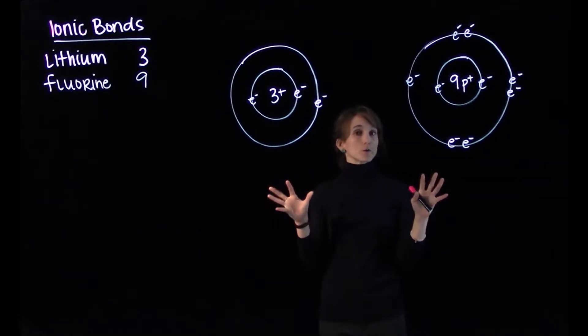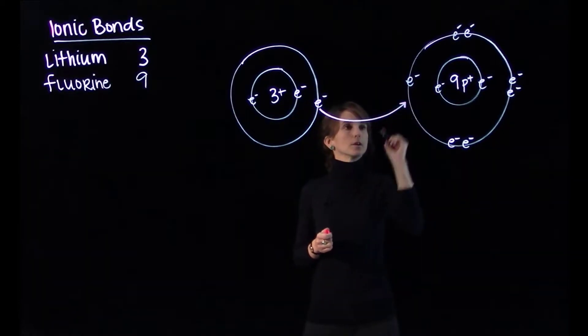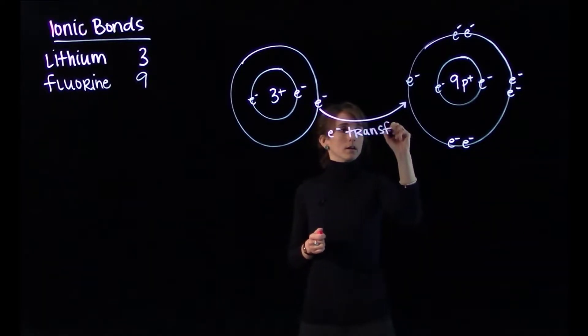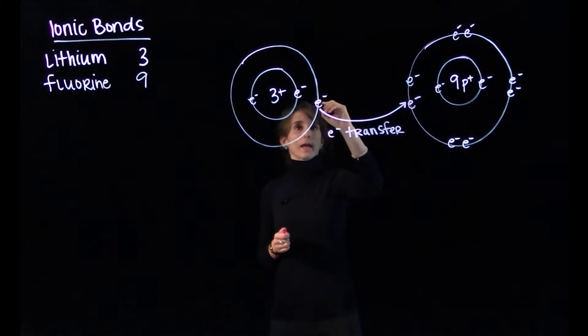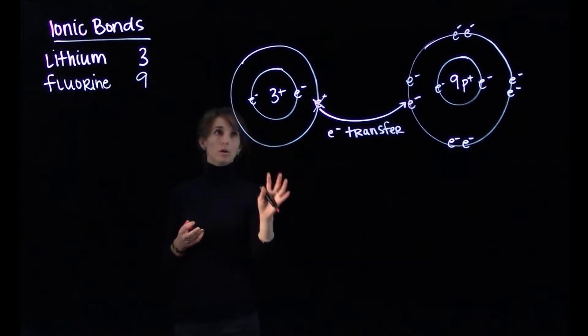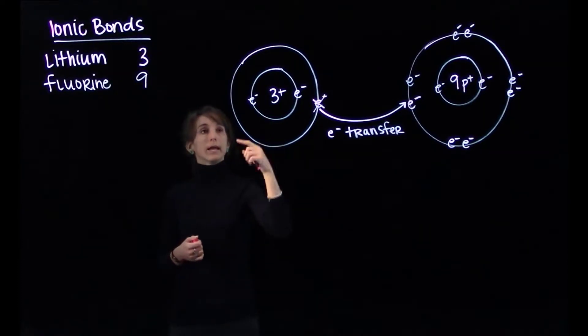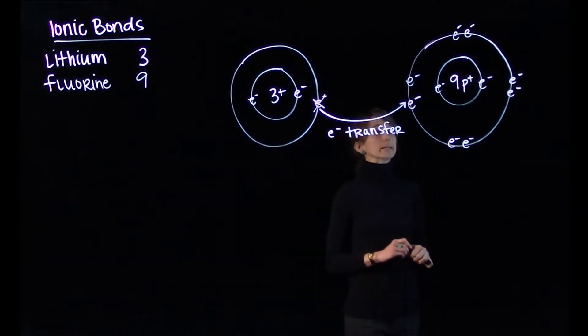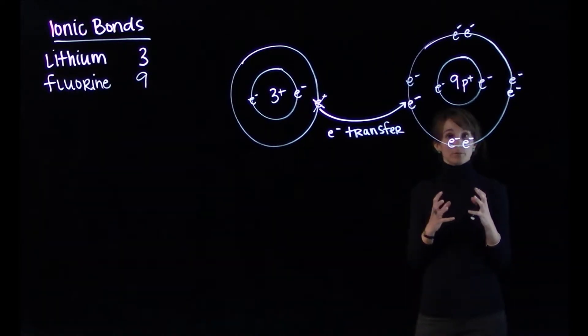If lithium and fluorine are in close proximity to one another, this lonely outer electron on lithium can be transferred to the fluorine atom. So that electron ends up over here and disappears from the lithium. When we look at each atom now, lithium has a full outer shell because now the full outer shell is this smaller inner ring. It can hold two electrons and it is holding two electrons. For fluorine, the outermost shell can hold eight electrons and it is holding eight electrons. So fluorine is now stable. It has a full outer shell.